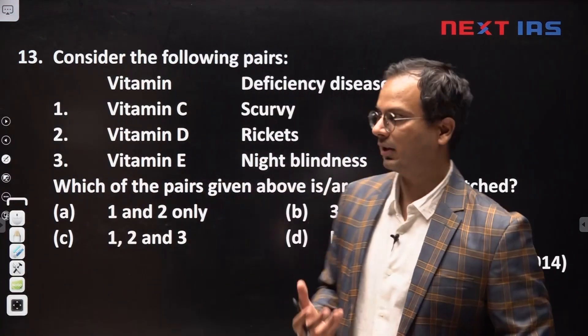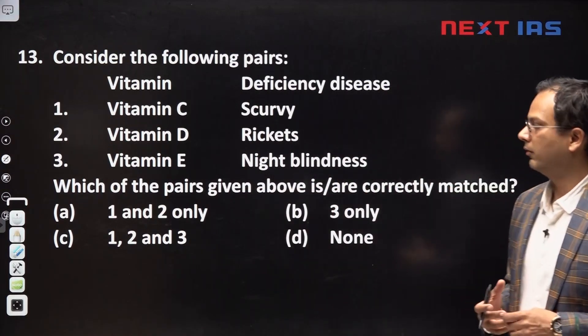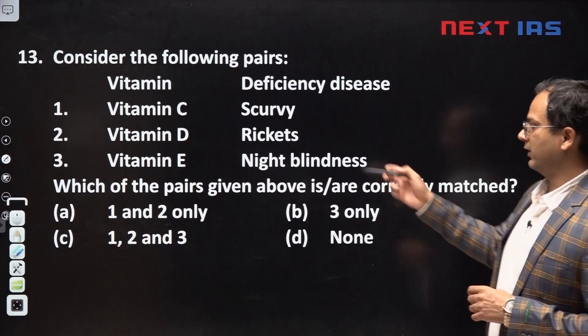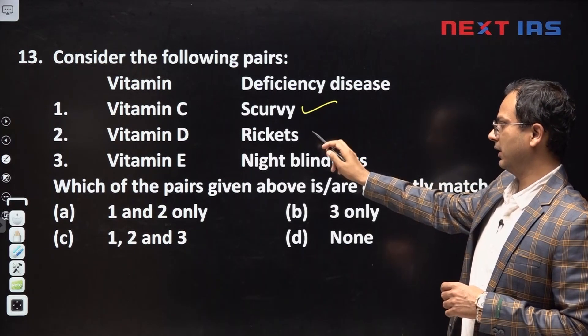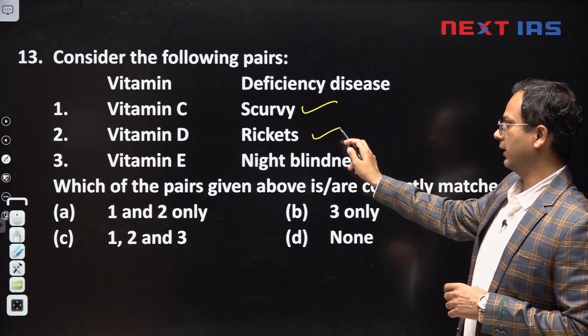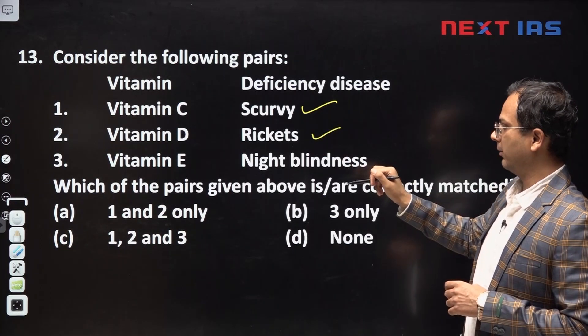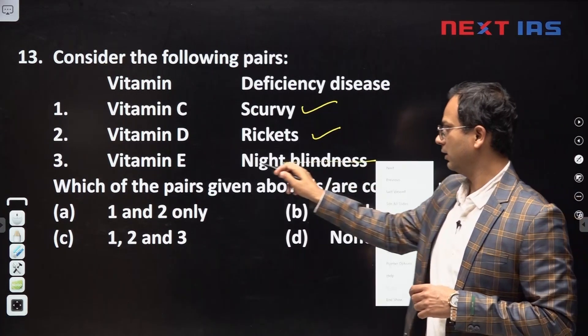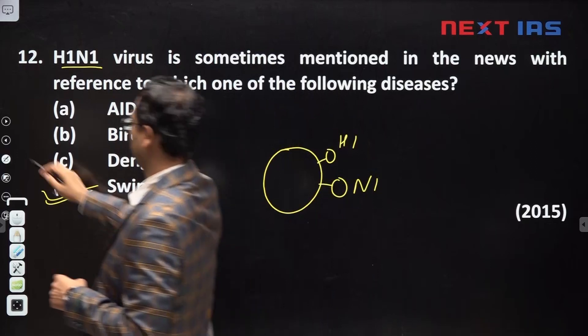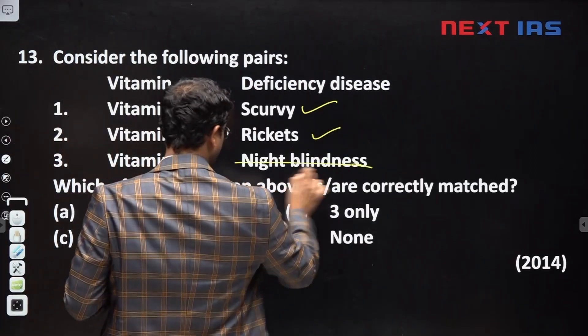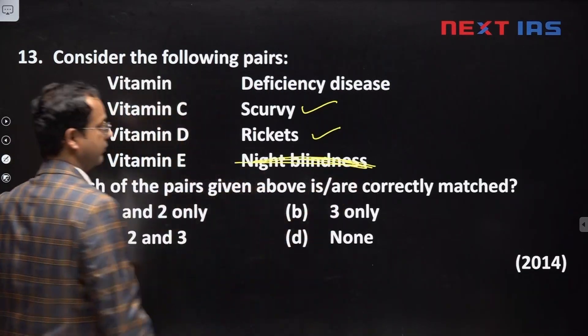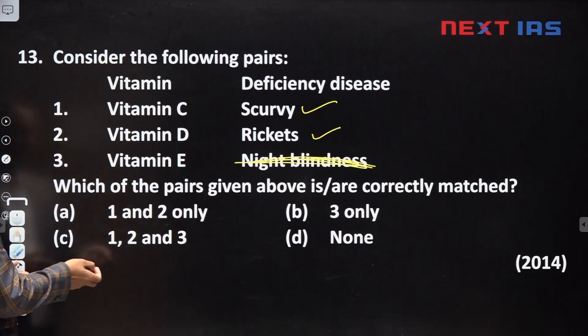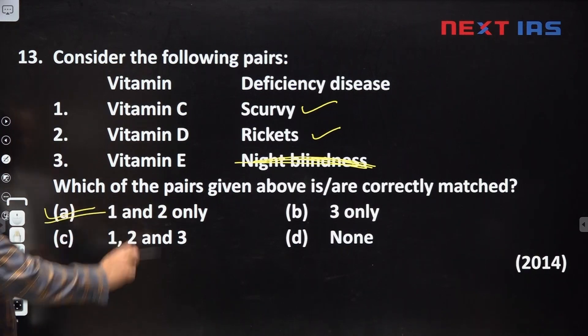This is a very standard question, typical question - Vitamin and their deficiency diseases. Vitamin C deficiency is scurvy, that is correct. Vitamin D deficiency is rickets, that is correct. Vitamin E deficiency is not night blindness. Night blindness is because of vitamin A deficiency. The third statement is incorrect and 1 and 2 are the only correct option.